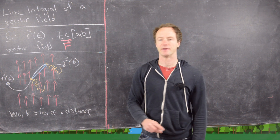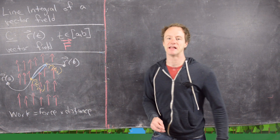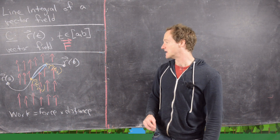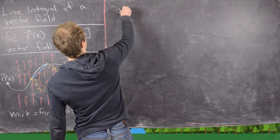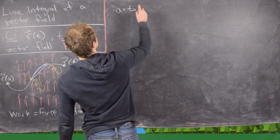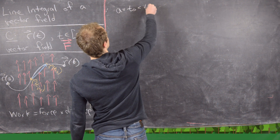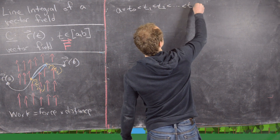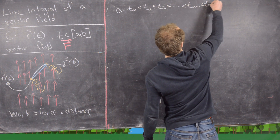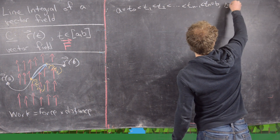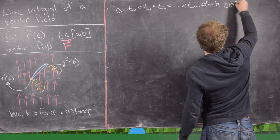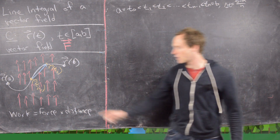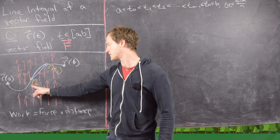Since we're talking about an integral, we're going to split the interval A to B up into pieces. A equals T0 less than T1 less than T2, all the way up to T(N-1) less than TN which equals B. We can call delta T as B minus A over N, and we'll assume that all of these are equally spaced.